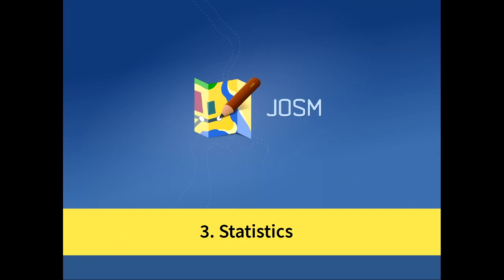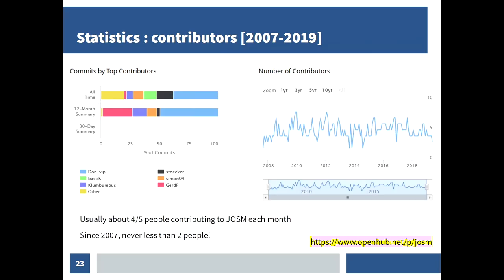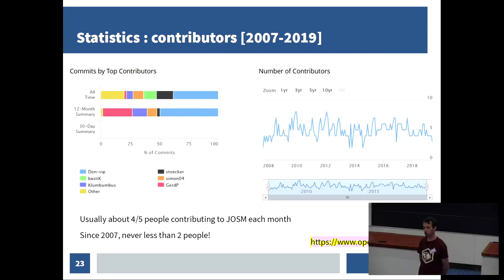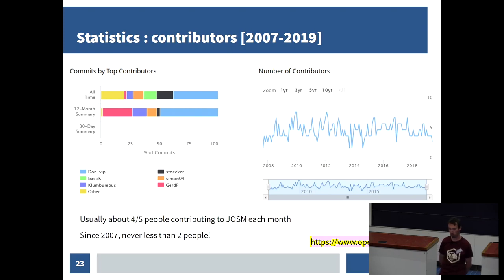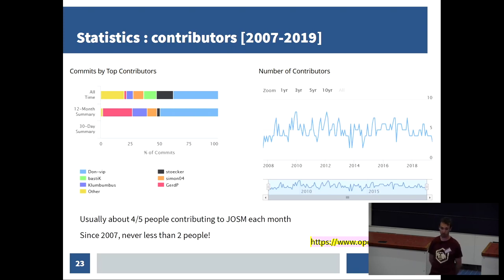Now I'll show you some interesting statistics. First of all, the number of active contributors. You can see in the last 10 years it varied between two and eight contributors per month, with an average of about four to five people each month. So it's very active, and I'm particularly glad that since 2007 we have never had less than two people contributing to JOSM.